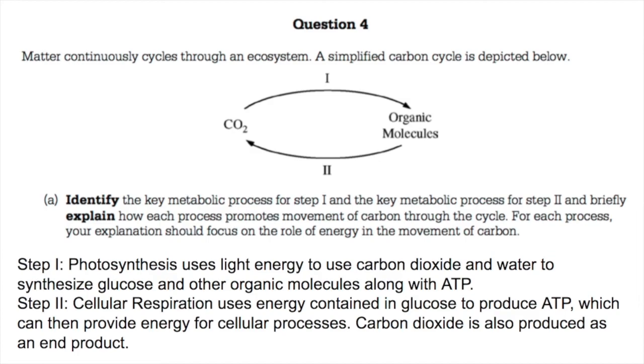And also in pyruvate oxidation, you're also going to see production of carbon dioxide. And then the carbon is going to cycle back into photosynthesis where the plants are going to turn it into organic molecules like glucose and the cycle will continue.